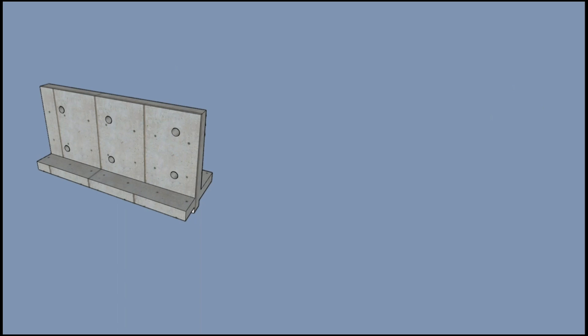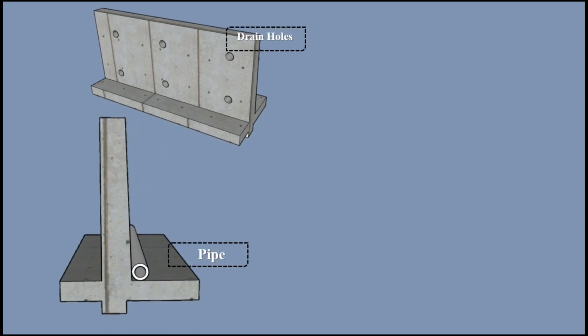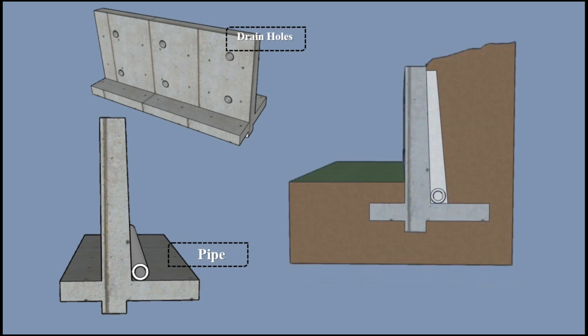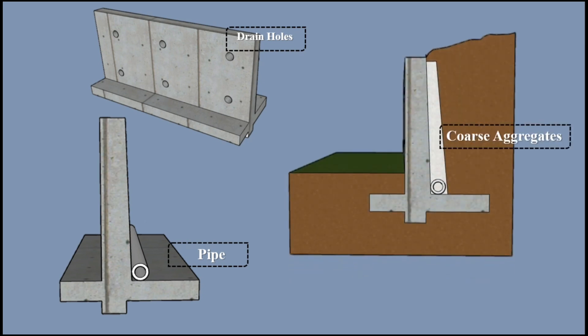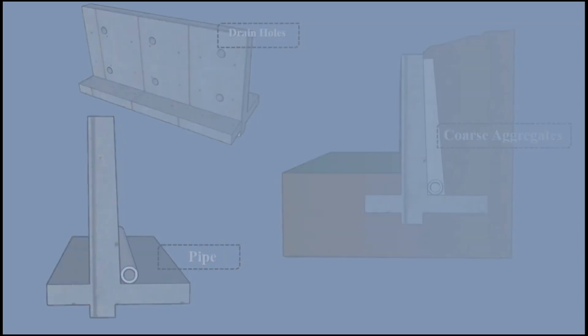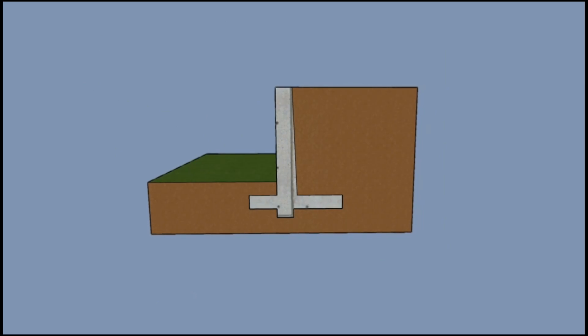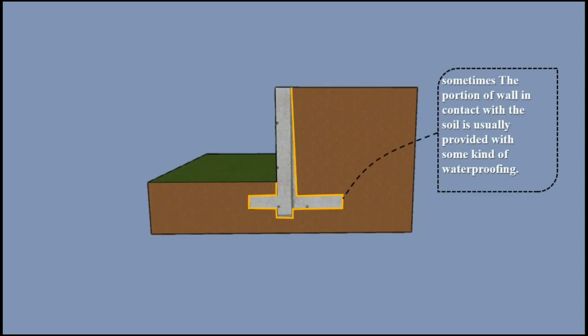The stem may be provided with drain holes with a slope for water drainage. Similarly, sloping perforated pipes may be provided below for water drainage. The soil behind the stem can be coarse aggregates so that water percolates and exits via drains. Sometimes the portion of the wall in contact with soil is provided with waterproofing.